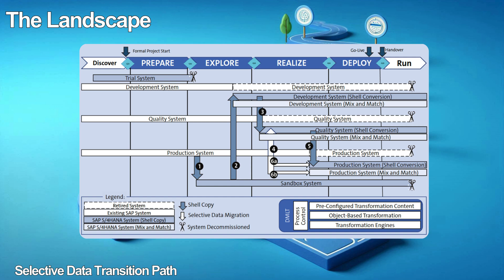Let's talk about the landscape. The discover phase starts with trial system access to review the innovations and fitment of current business requirements. The team then builds the sandbox environment by shell copying the existing production environment, using it to drive delta design workshops in the explore phase. Next, the sandbox is shell copied to the SAP S4 HANA development environment, where configuration work continues based on the product backlog. The project team then creates the QA environment by shell copying from the dev environment. In QA, the team completes all testing activities including selective data migrations, fixes bugs in the dev environment, and transports fixes to QA. After successful user acceptance testing (UAT), the team shell copies the solution from QA to the production system and performs the selective data migration from the existing production environment to the new production environment.